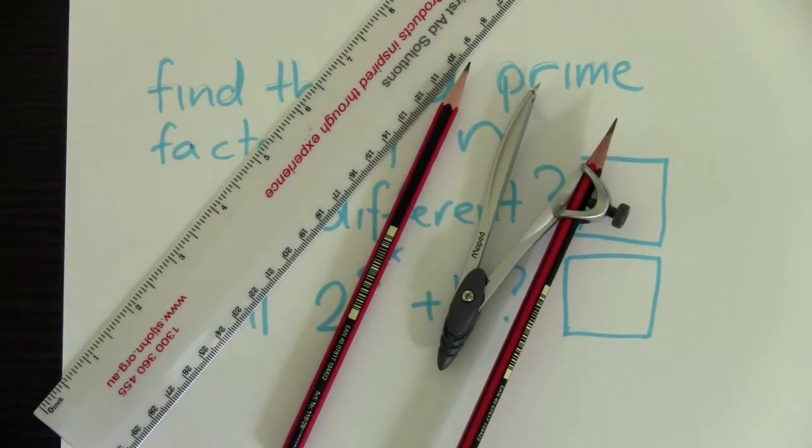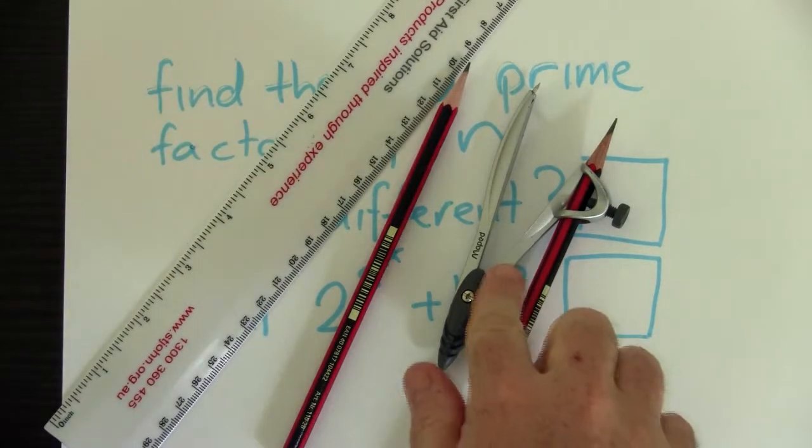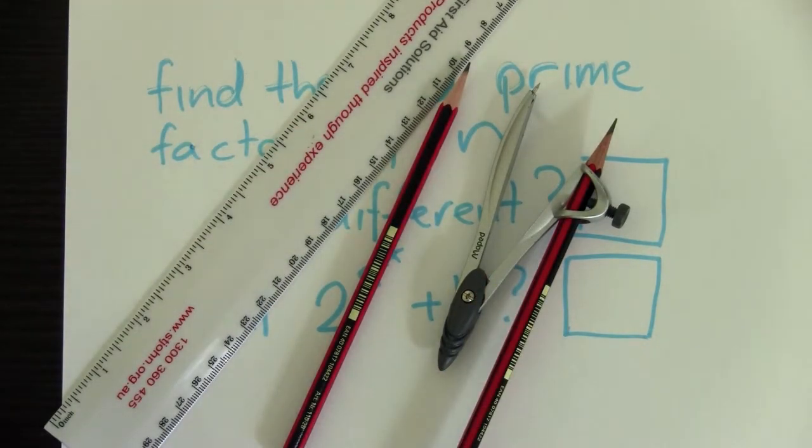In this video, I'm going to talk about how to make, using a ruler and a compass, an equilateral triangle.